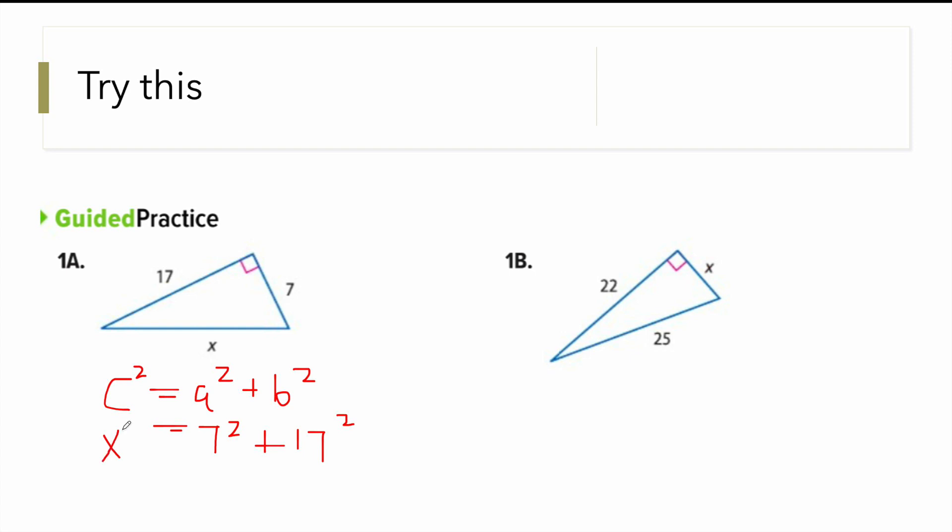Our A is 7 squared, our B is 17 squared, and our C is X squared because it's the one opposite our 90 degrees. So what is 7 squared plus 17 squared? We get 338. And then X squared, we square root both sides. X will be equal to the square root of 338, it is 13 root 2. That's about 18.38.